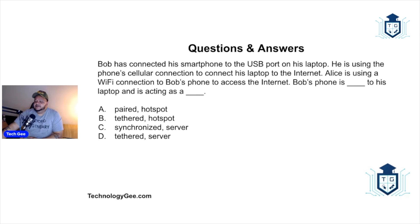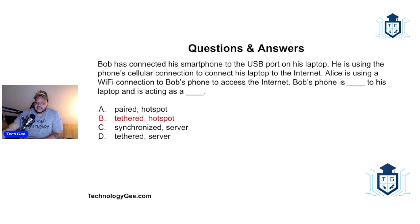Question five: Bob has connected his smartphone to the USB port on his laptop and is using the phone's cellular connection to connect his laptop to the internet. Alice is using a Wi-Fi connection to Bob's phone to access the internet. Bob's phone is blank to his laptop and is acting as a blank. The correct answer: Bob's phone is tethered to his laptop and is acting as a hotspot.